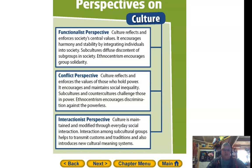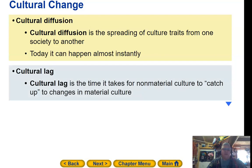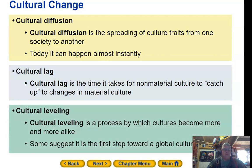Interactionist perspective: culture is maintained and modified through everyday social interaction. Interaction among subcultural groups helps transmit customs and traditions and introduces new cultural meaning systems. Cultural diffusion is the spreading of culture traits from one society to another, and today it can happen almost instantly. Cultural lag is the time it takes for non-material culture to catch up to changes in material culture. Cultural leveling is a process by which cultures become more and more alike — some suggest it is the first step toward a global culture.